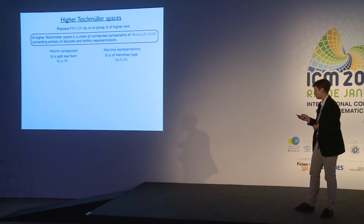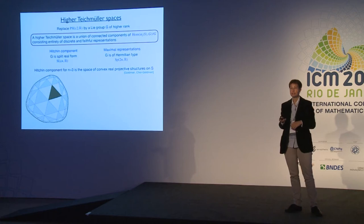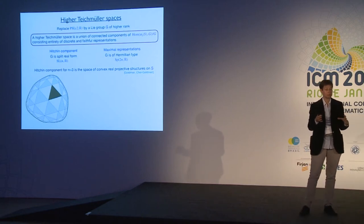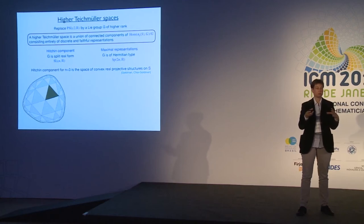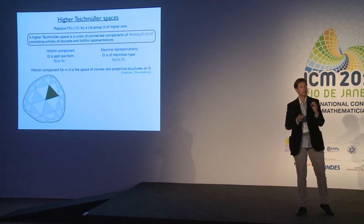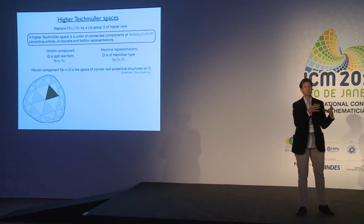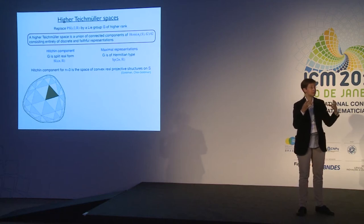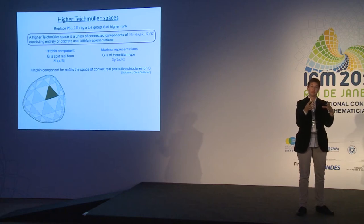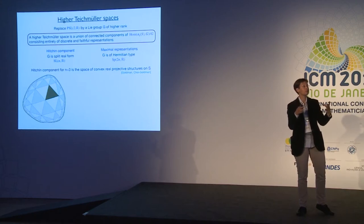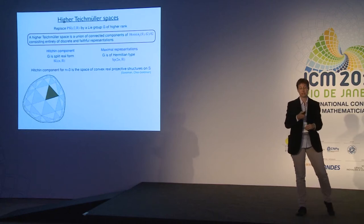I will focus on SL(n,ℝ) and Sp(2n,ℝ). For SL(n,ℝ), the Hitchin component has a nice geometric interpretation: a point in the Hitchin component can be identified with a surface modeled on a convex domain in projective space. Starting from the Klein model of hyperbolic space in dimension 2 — the interior of a disk in projective space — you deform this disk to a more complicated convex projective set, giving deformations in the Hitchin component for n=3.